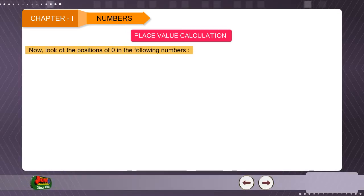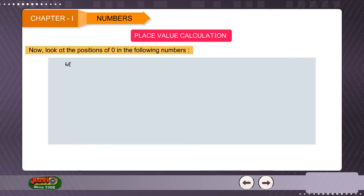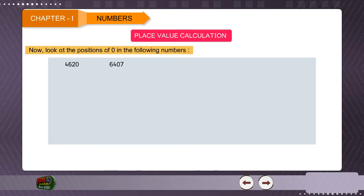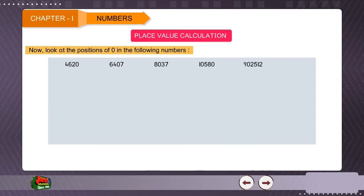Now look at the positions of 0 in the following numbers: 4620, 6407, 8037, 10,580, and 9,92,512.